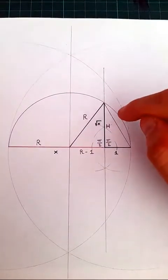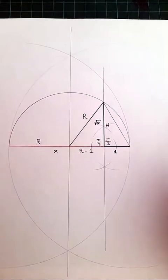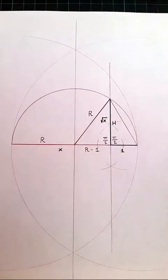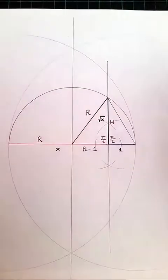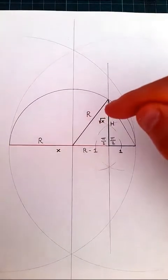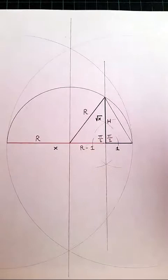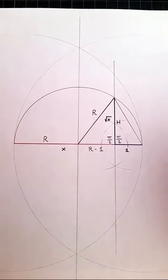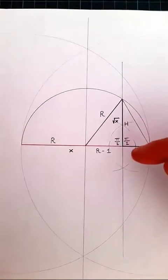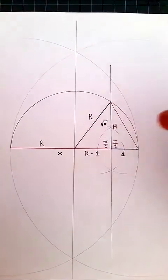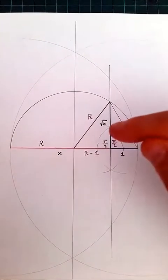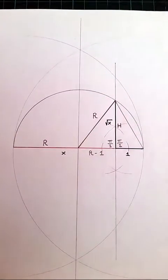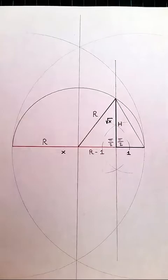So, the height here will produce the equation r minus 1 squared plus h squared is equal to r squared. If we use Pythagoras' theorem, we are going to discover that this length over here, h, is equal to the square root of x. And I'm going to demonstrate this algebraically.